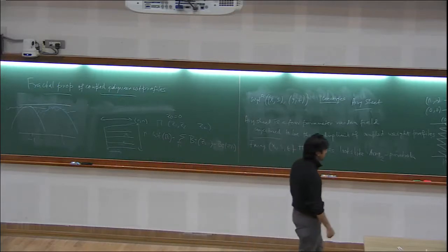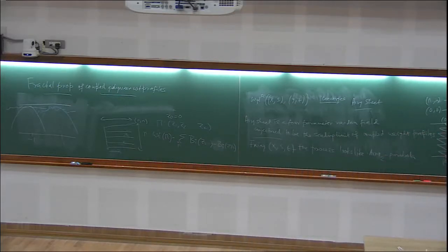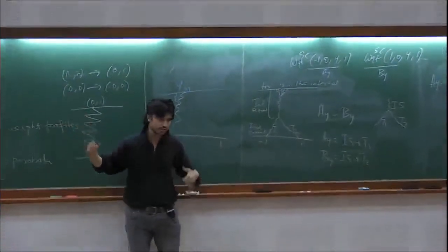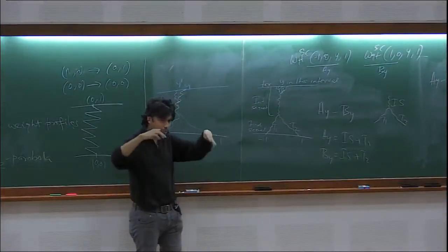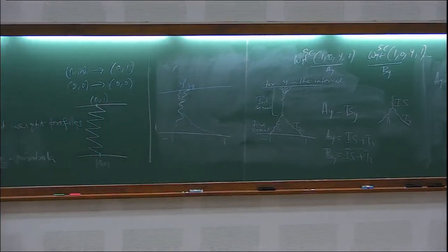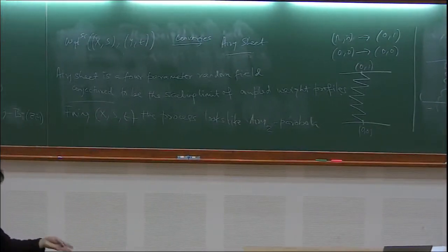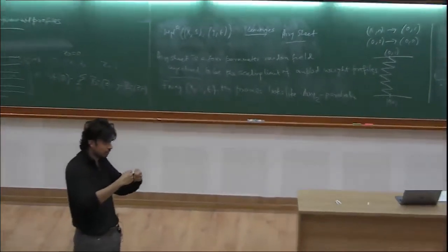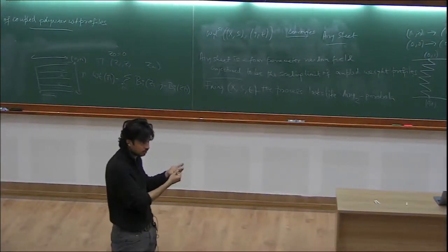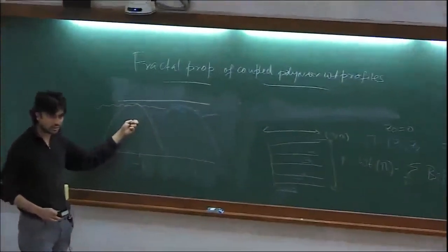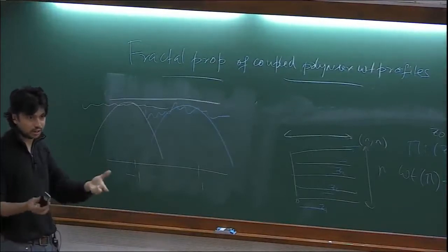If you believe this picture, the difference is locally flat, but of course cannot be globally constant, because one decreases like a parabola on one side and the other on the other side. There will be some jumps of this process, but they happen on a set of smaller dimension. Almost surely it will be flat, and there is a smaller subset of dimension less than one on which it will be different. The goal is to understand the fractal properties of that set. This is how you translate the coalescence structure of geodesics to information about polymer weight profiles.